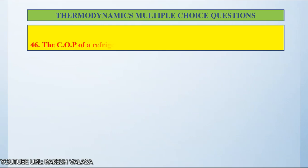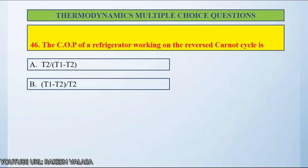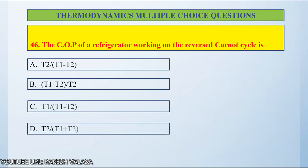Question number 46: The COP of a refrigerator working on the reverse Carnot cycle is — Option A: T2 by T1 minus T2, Option B: T1 minus T2 by T2, Option C: T1 by T1 minus T2, Option D: T2 by T1 plus T2.